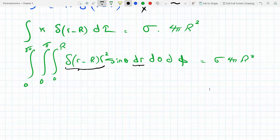Now so then I have left, 0 to 2π dφ and then 0 to π sine theta dθ, and this has to equal sigma times 4πR².